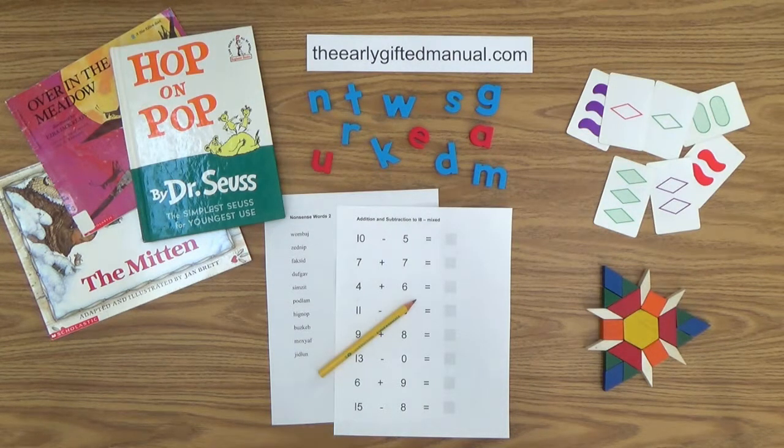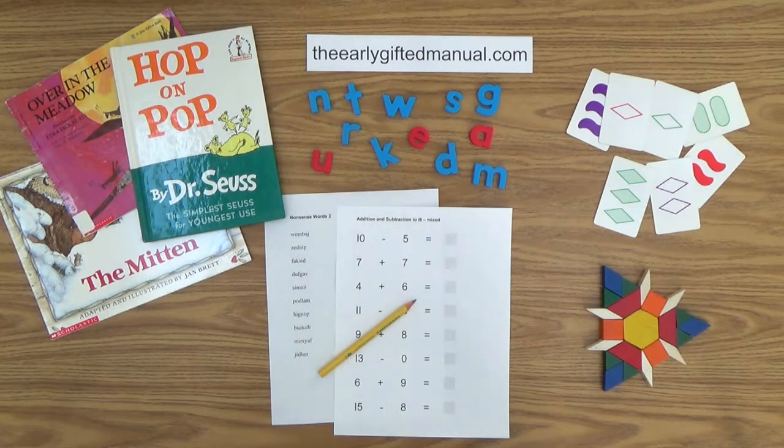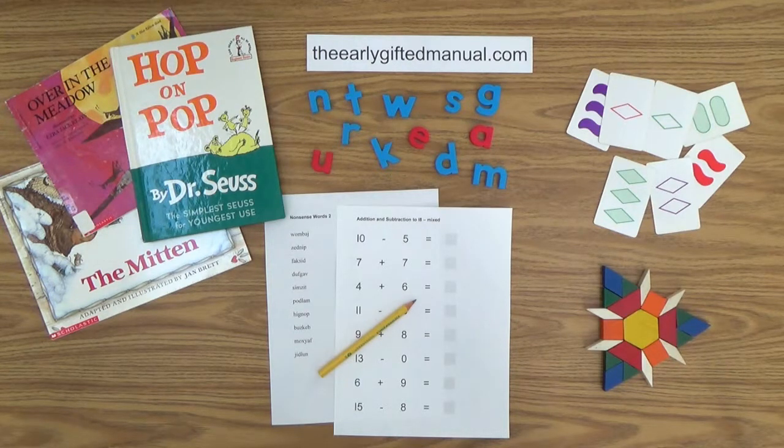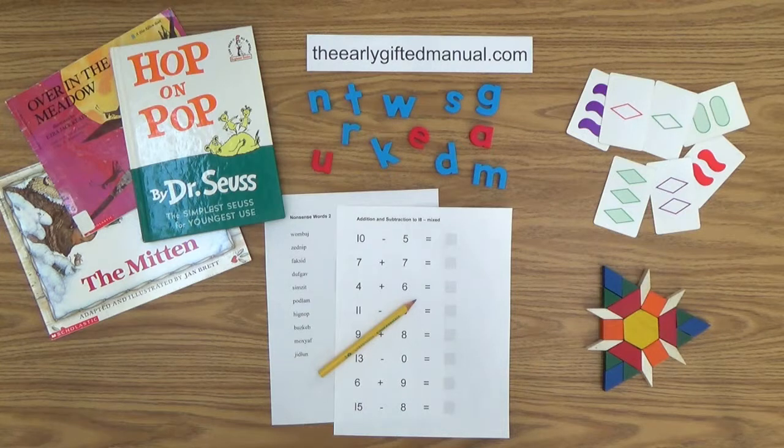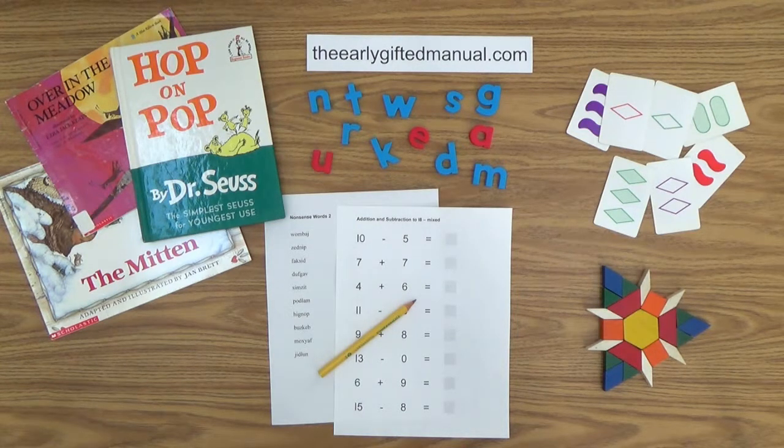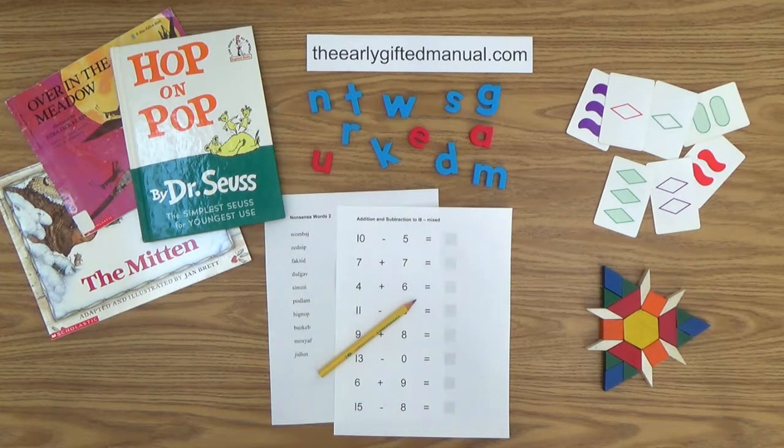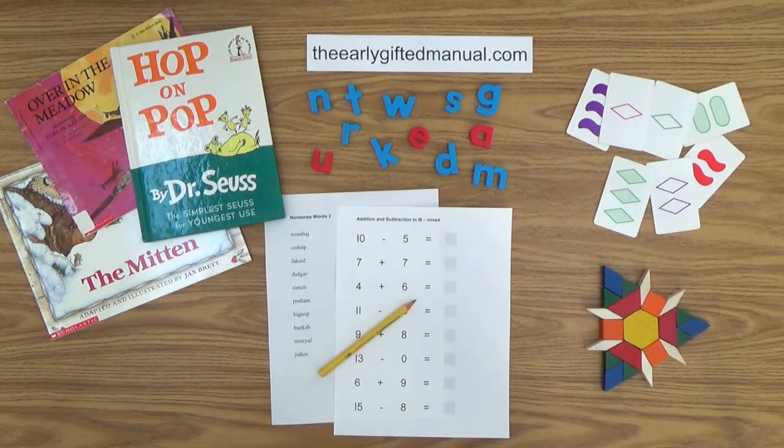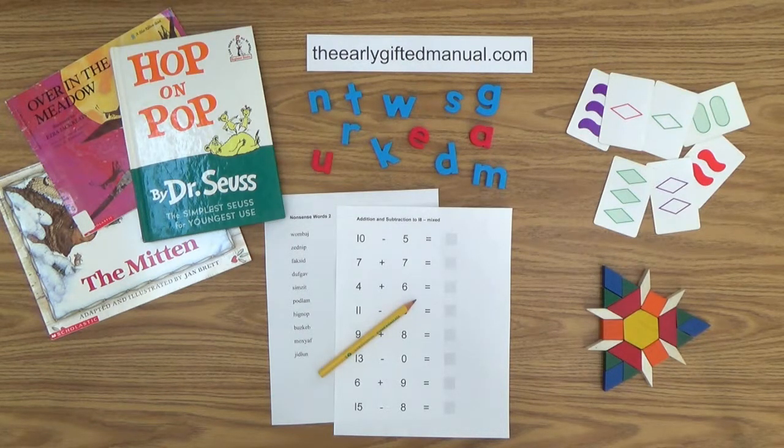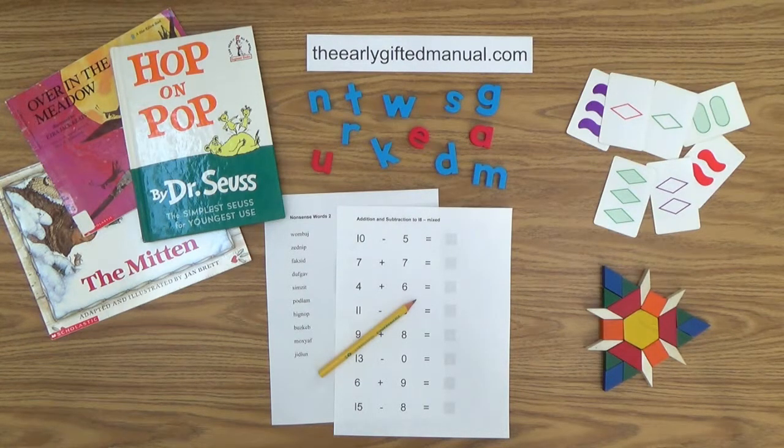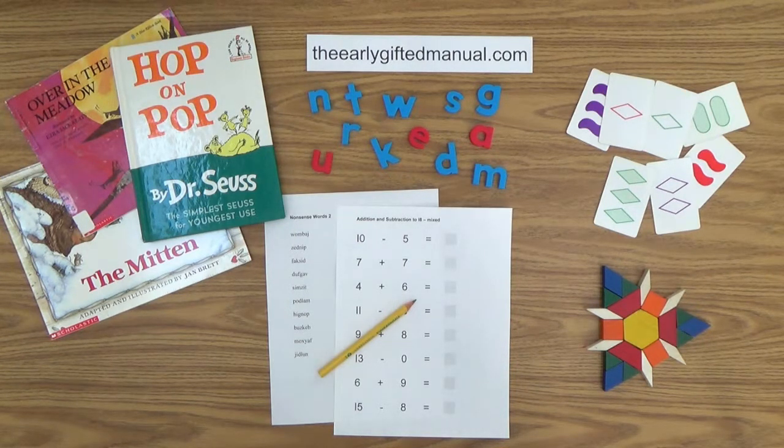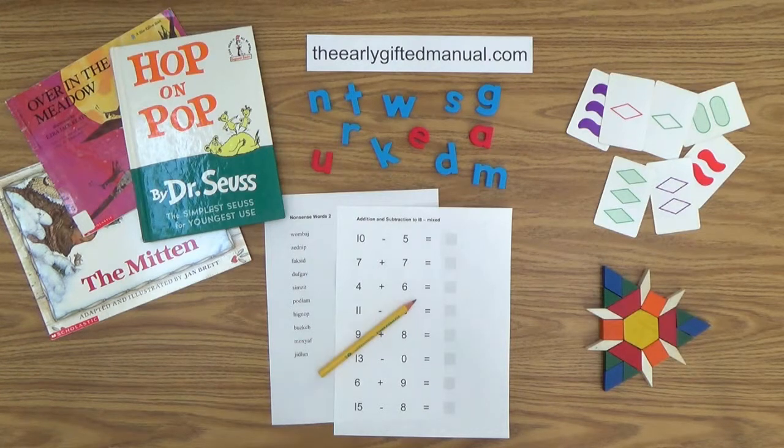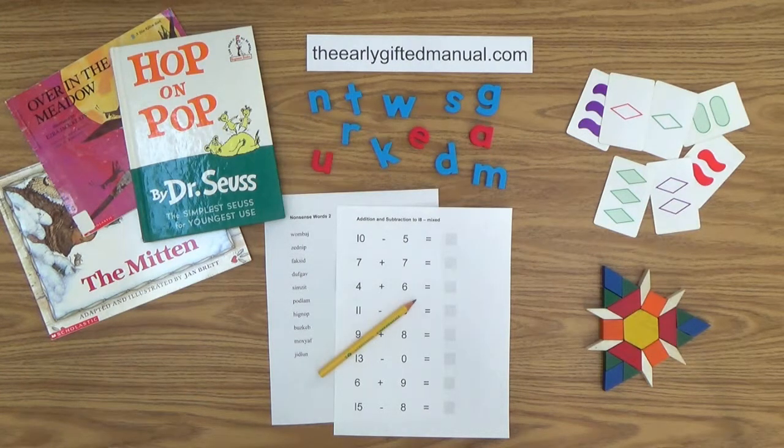As the video lessons are designed to work in conjunction with the program on my website, I ask you to, at some point, click on the URL link in the description box below and this action will take you to theearlygiftedmanual.com. By doing that, you will be able to put this lesson and all of the video lessons here on my channel in the proper context of the total program that I am presenting to you and your child.